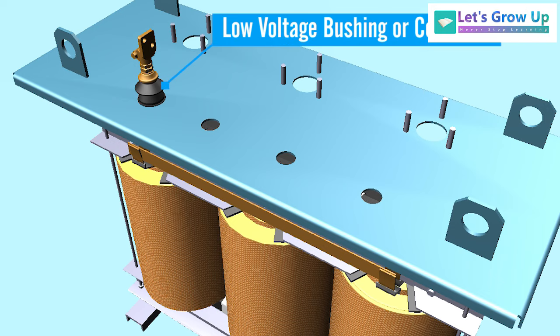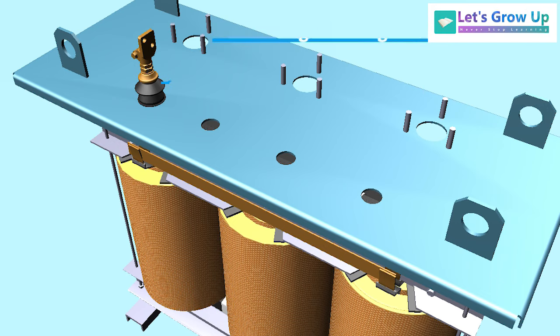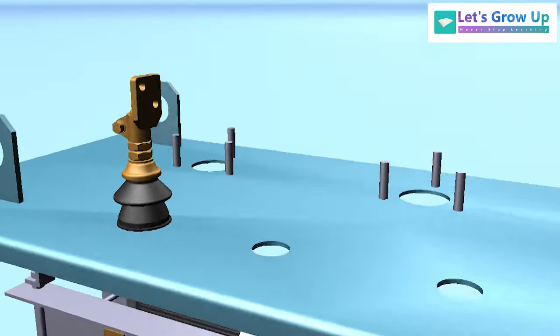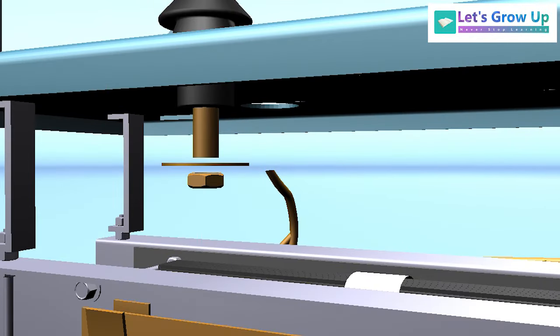Low voltage bushing or connector: The transformer bushing is an insulating structure that facilitates the passage of a current carrying conductor through the grounded tank of the transformer.